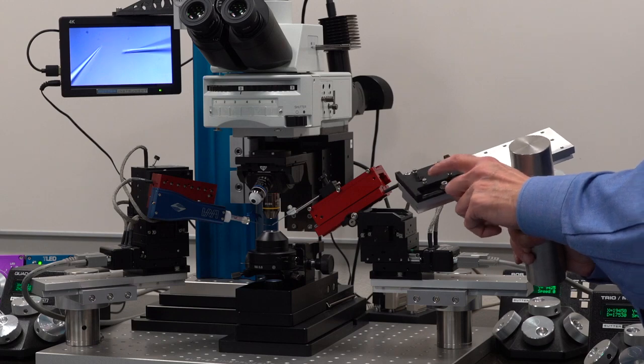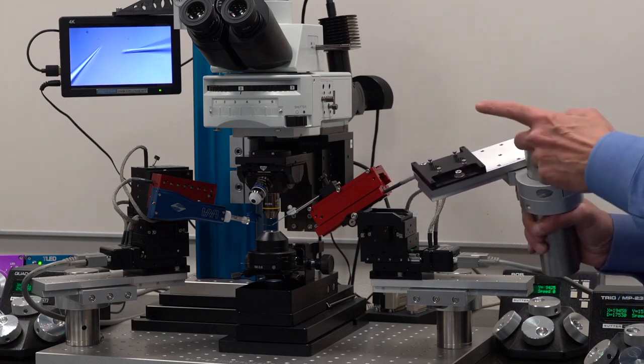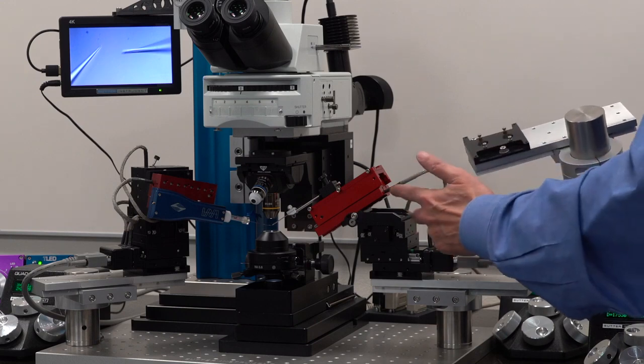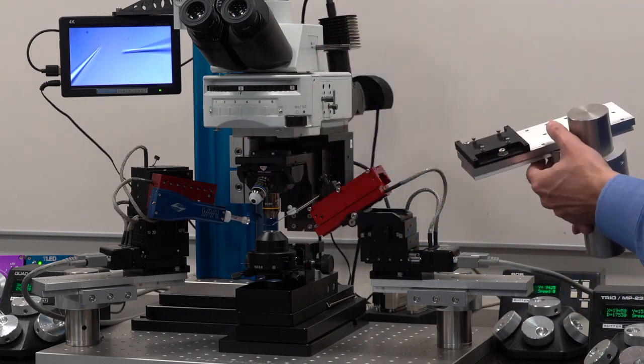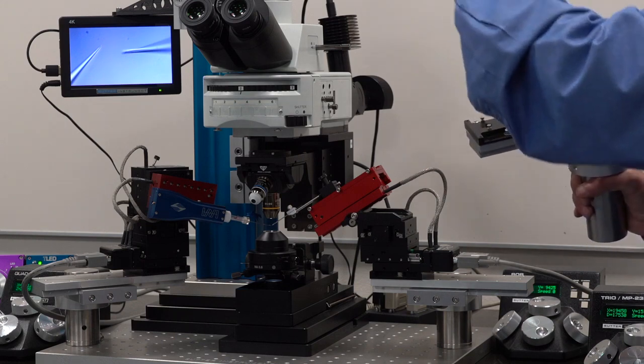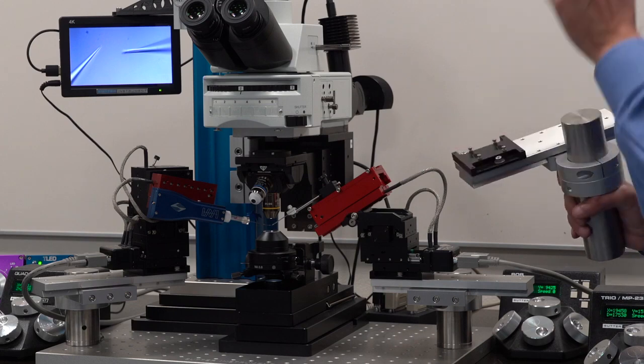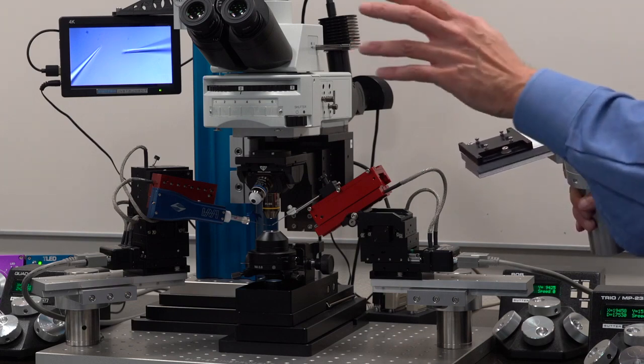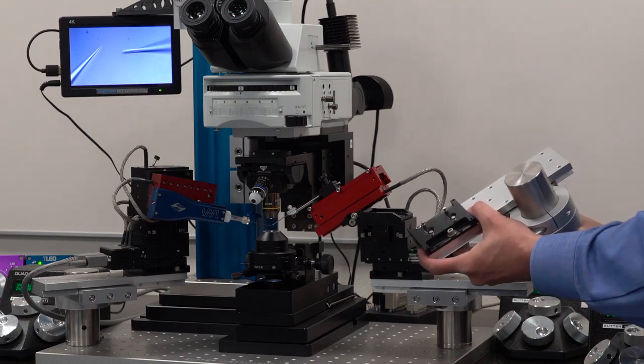By the way, this is the adapter plate that we use to connect any of our manipulators. Over here, I've spoken about the 235, the quad. Earlier, I spoke about the 865, the 30845, the MP225, the MP285. In order to install any of them on any surface, you need to first install this adapter plate.